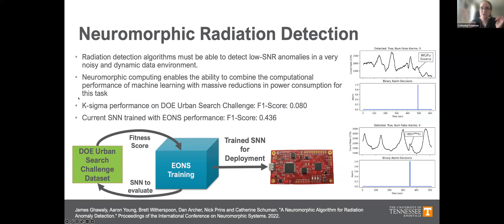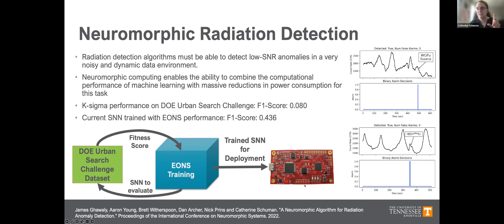We can also do anomaly detection. We're working with researchers from Oak Ridge National Lab's nuclear nonproliferation team, looking at detecting low signal-to-noise ratio anomalies in very noisy and dynamic data environments. With our spiking neural network we're getting significantly better results than their baseline and approaching state-of-the-art deep learning results, while fitting on a neuromorphic FPGA-based implementation developed at Oak Ridge where the largest network you can fit is 256 neurons. We're getting comparable results to the best deep learning result in under 256 neurons and 4,096 synapses.